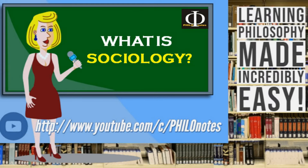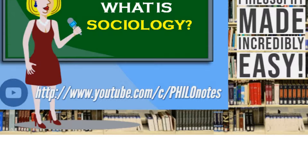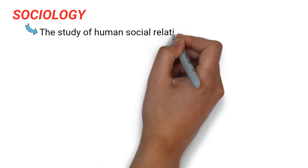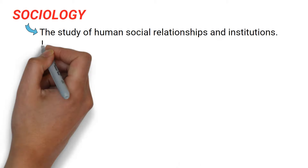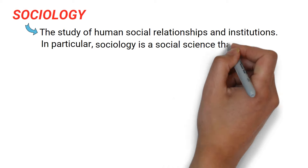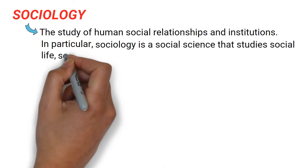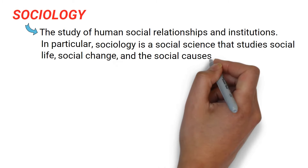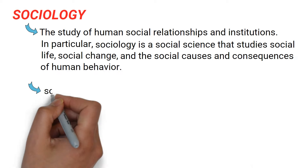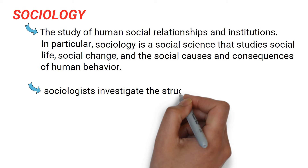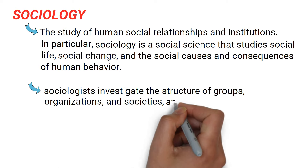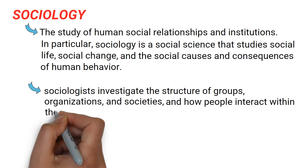What is sociology? Broadly construed, sociology is the study of human social relationships and institutions. In particular, sociology is a social science that studies social life, social change, and the social causes and consequences of human behavior. For this reason, sociologists investigate the structure of groups, organizations, and societies, and how people interact within these contexts.